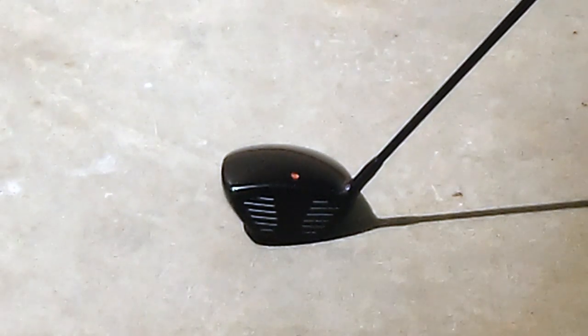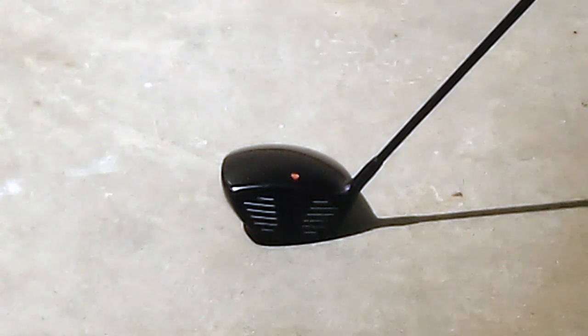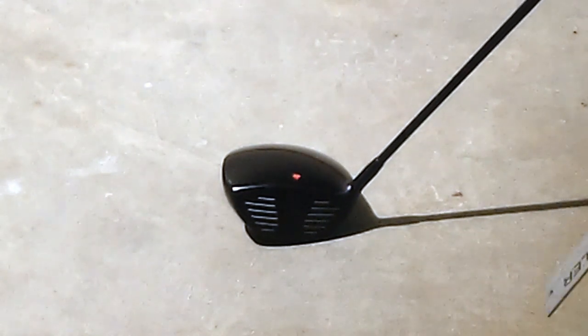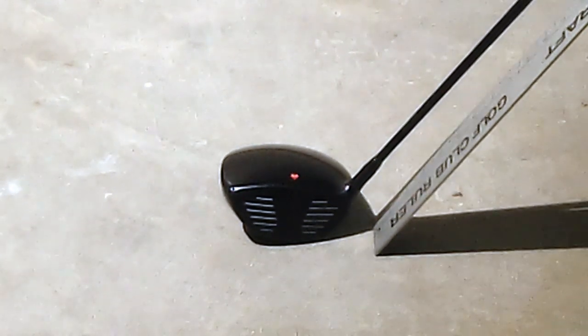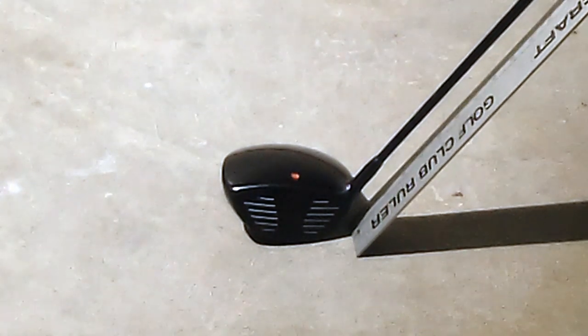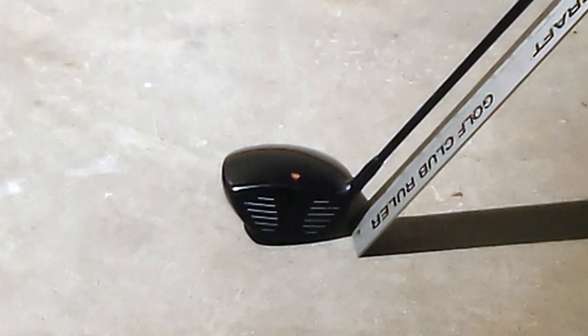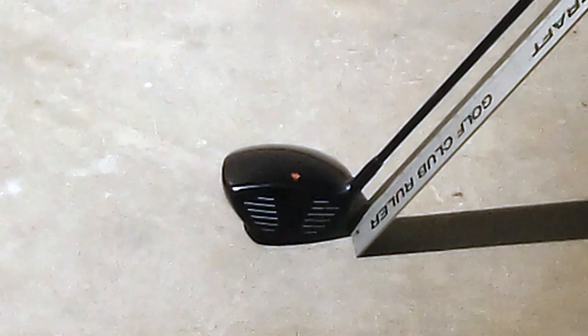Now, let's start out with the driver and show you how to measure the club length first. You want to place the club on the ground with the center of the sole touching the ground. Next, take your 48-inch ruler and slide it or place it behind the back edge of the heel along the back side of the shaft.